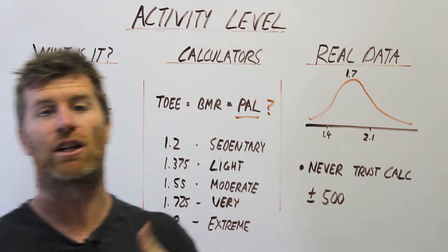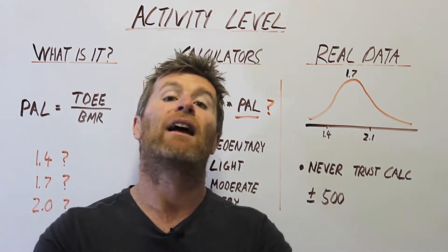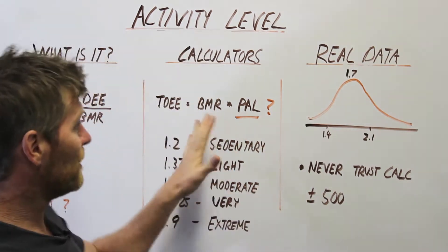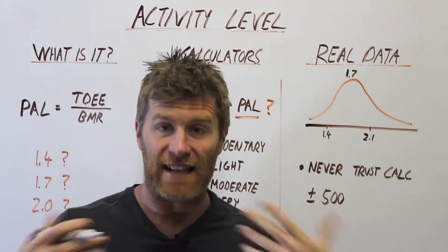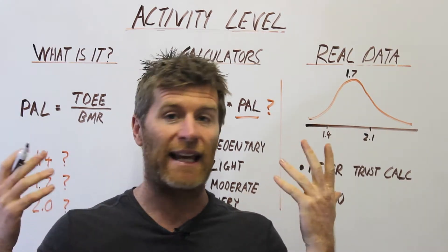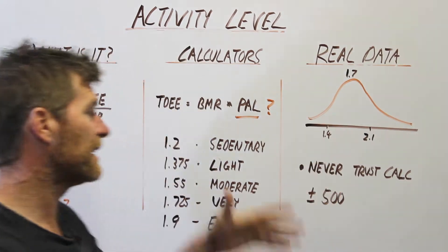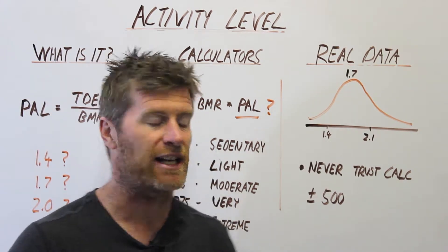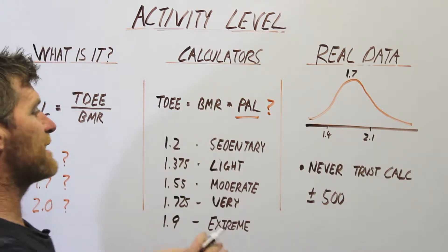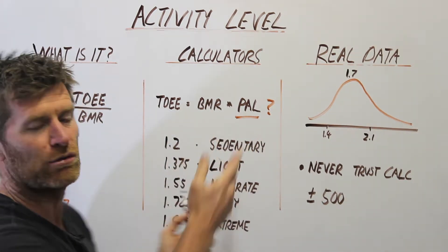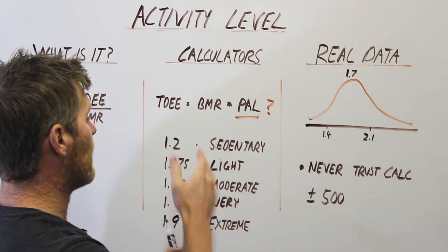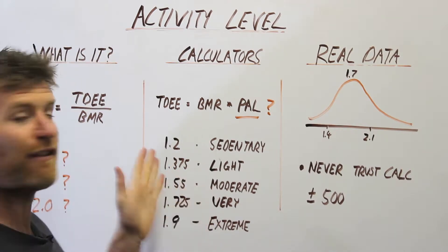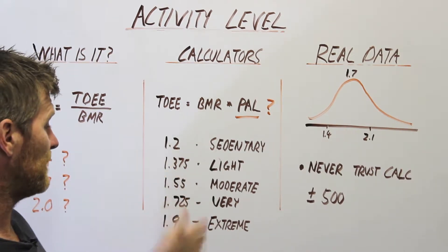That gives you an estimate of your TDEE, your total energy expenditure, then they apply a deficit to work out what you need to lose weight. The problem is that for the physical activity level multiplier, people are making absolute guesses about what this number is. They've used the same multipliers out of the textbooks for 30 years: sedentary is 1.2, a little exercise is 1.375, moderately active is 1.55, very active 1.7, and extremely active 1.9. You're just supposed to guess based on how much exercise you do.